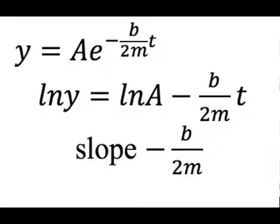If we take a natural logarithm of both sides of the equation, we find that the data should fit a straight line with a slope of negative b over 2m. This will allow us to find out what the damping coefficient b is.